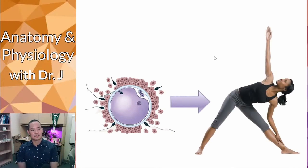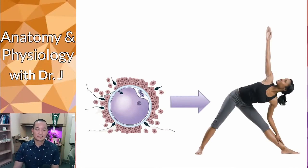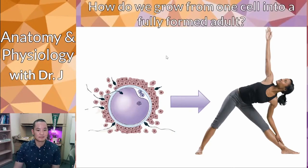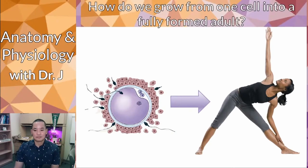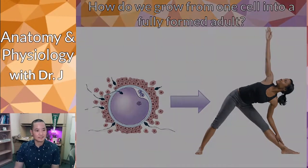How do you go from a fertilized egg and then become a full human? How do you start off as one cell and then end up as a fully formed adult?